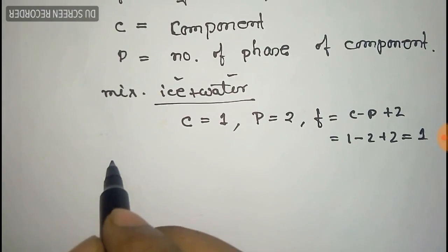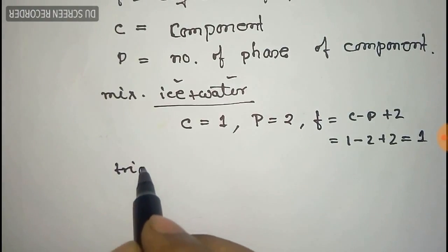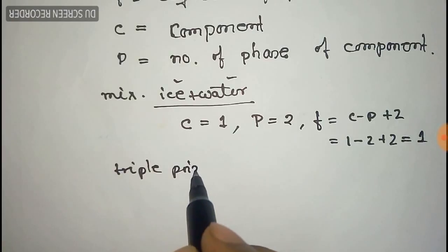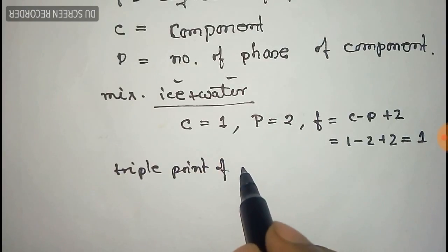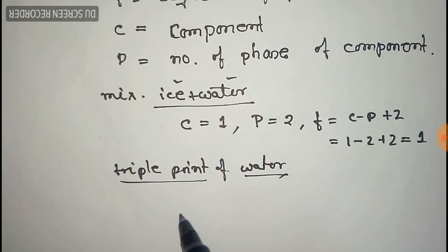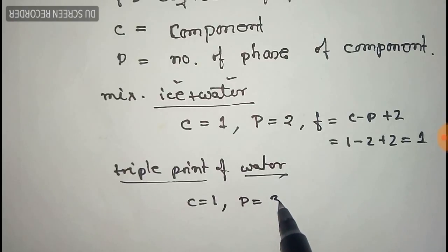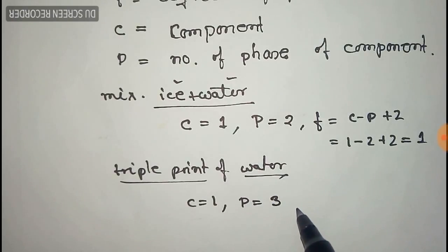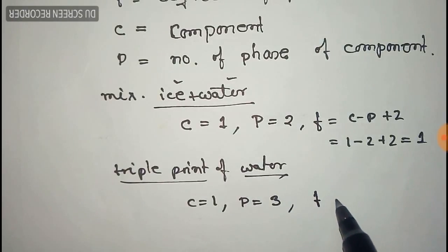And another example of water at triple point. At triple point we know there are three phases of water. So component is 1 and phase is 3 there. So degrees of freedom will be 0.